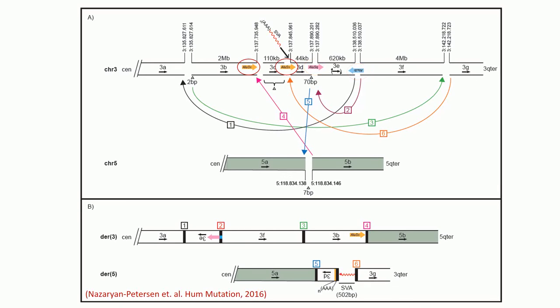The two AluSx elements flanking the 110 kilobase deleted 3c fragment are in the same orientation, while two other Alu elements spanning the breakpoints of fragment 3e are from different subfamilies, AluSq and AluJb, and are in opposite orientation.